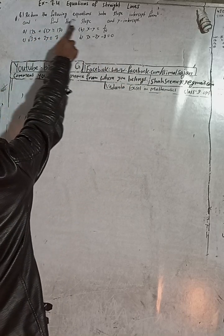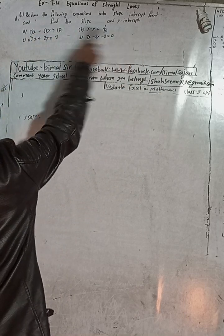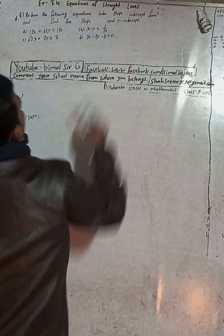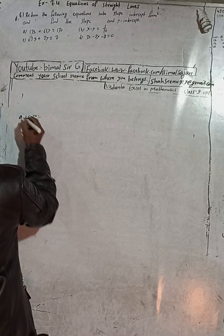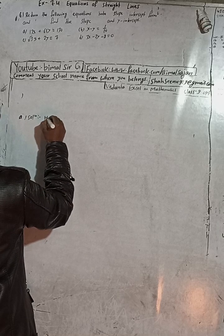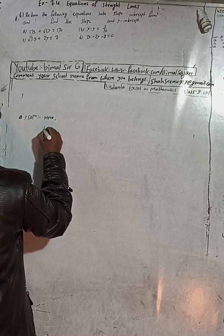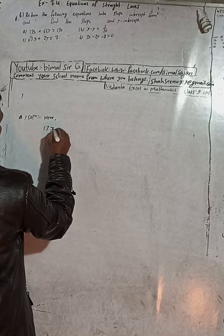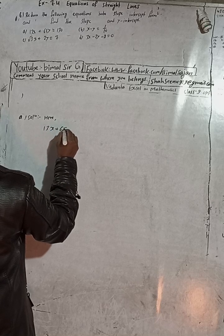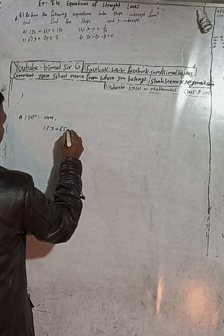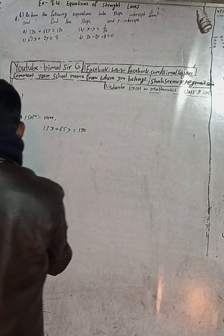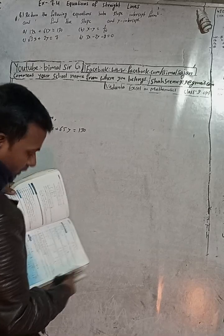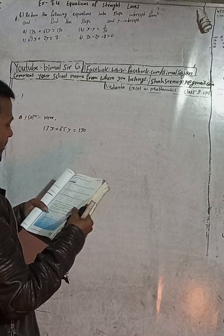Here the question is number 6 of exercise 7.4, equations of a straight line, Vedant Excel in optional mathematics class 9. The task is to reduce the following equations into slope-intercept form and find slope and y-intercept. There are four questions. For question 8a: 13x plus 65y is equal to 130.